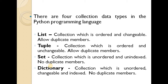Tuple is ordered and unchangeable, and it allows duplicate members. List is changeable, whereas Tuple is unchangeable. The next types are Set and Dictionary.